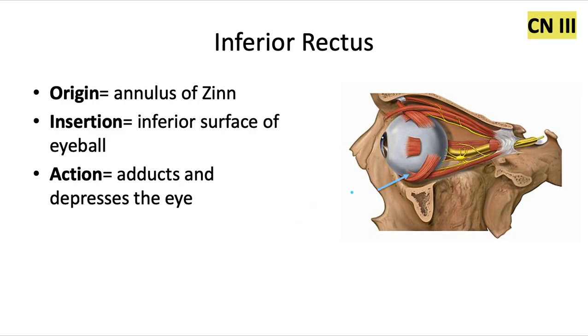The inferior rectus is hiding underneath the inferior oblique muscle. It also originates from the annulus, inserts into the inferior surface of the eyeball, and it adducts and depresses the eye.